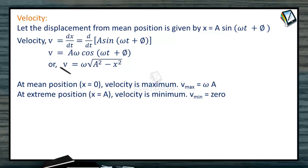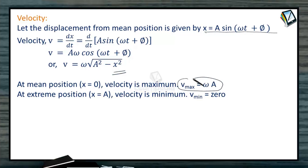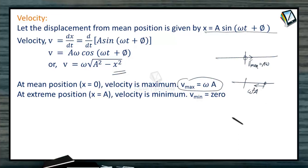Velocity is dx by dt. If x is equal to a sin(omega t plus phi), then v equals a omega cos(omega t plus phi). At the mean position, when x equals 0, the particle's velocity is a omega — the maximum velocity. When the particle is at the extreme position, velocity is 0 and acceleration is maximum at omega squared times a, directed towards the mean position.